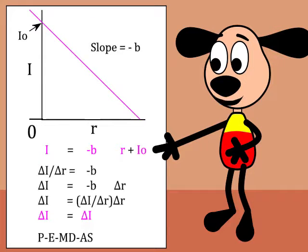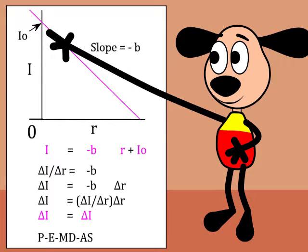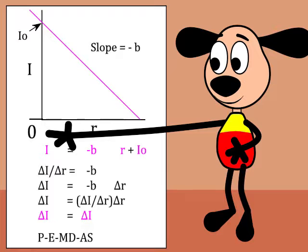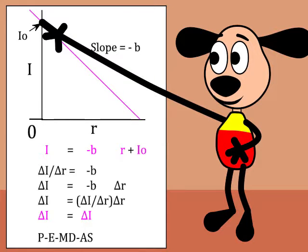The investment function says that autonomous investment is the amount of investment when the interest rate is zero, and negative interest rates are required to get more. That's absurd.